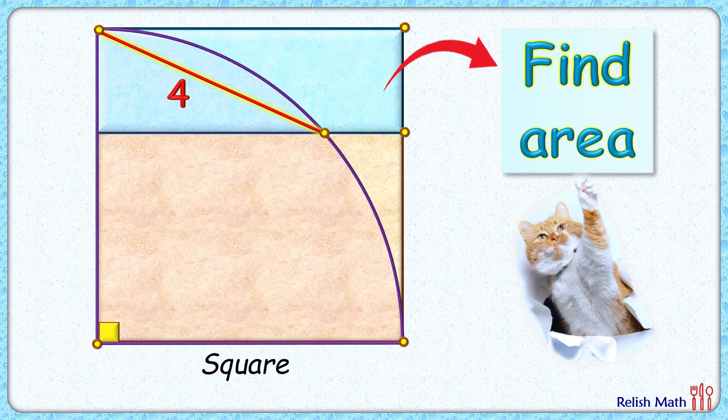Welcome everyone. This interesting question given to us is a brown square, a blue rectangle, and a purple quadrant. The length of this red line segment is 4 centimeters. The exciting part is with this limited data we have to find the area of this blue rectangle.